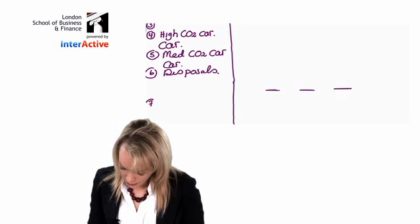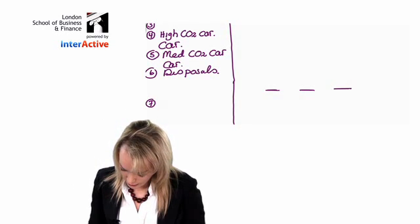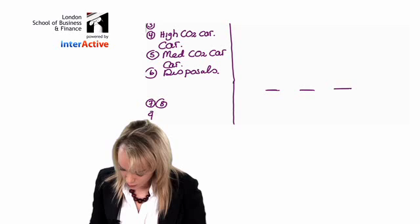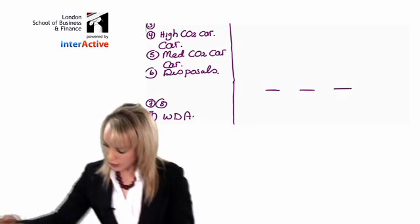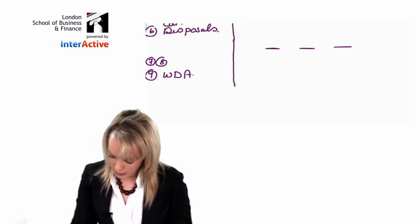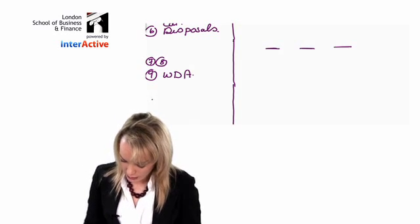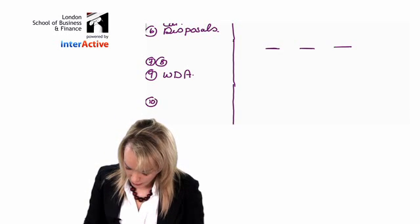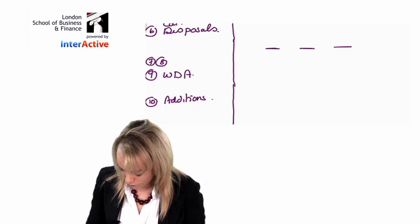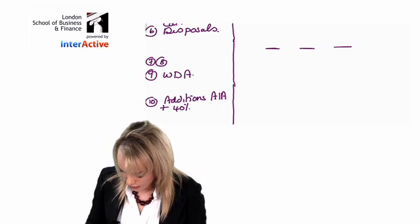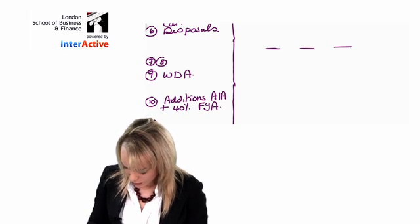I'm going to do line 7 and line 8, and then line 9 is the WDA, so I'm going to put that one in. Then line 10 is additions that get the AIA and 40% FYA, and then I'm going to have AIA.